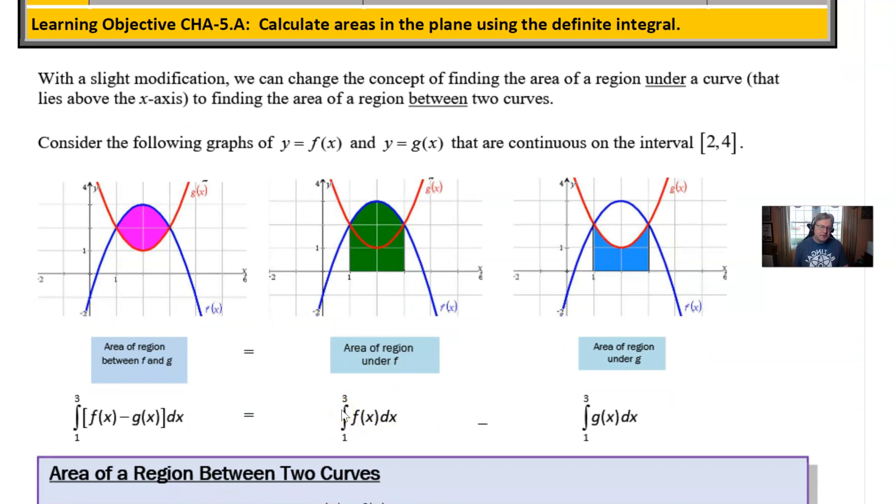This graphic here sets the stage for what we're really about to do. On the left side, you can see a situation where we have an area between this red curve, G of X, and the blue curve, F of X. If we break this down, we could think about the area underneath the blue curve, F of X, between the values, say, one and three. Something interesting happens if you were to subtract those two.